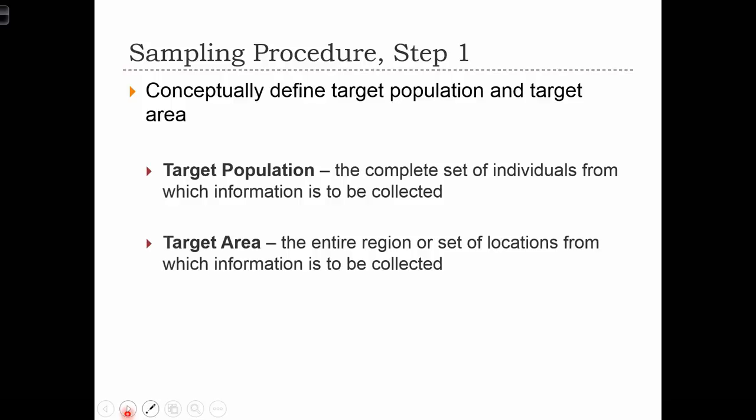In step one, we need to conceptually define the target population or target area. The target population is the complete set of individuals from which information is to be collected. If we are conducting a geographic sample, then we will have a target area — the entire region or set of locations from which information is to be collected.